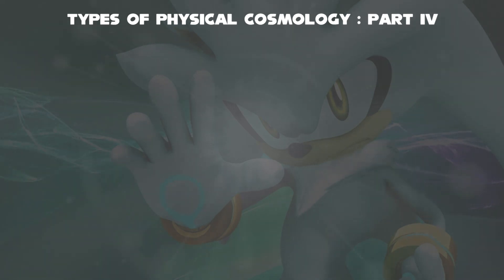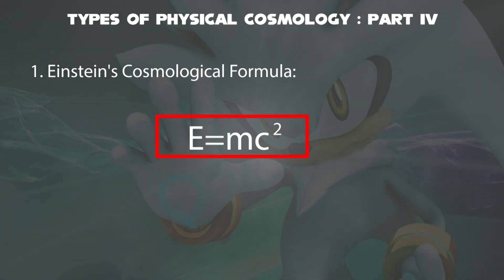First, the physical theory of the universe: we have E equals mc squared. This equation is called Einstein's theory. He described that energy equals mass times the speed of light squared.